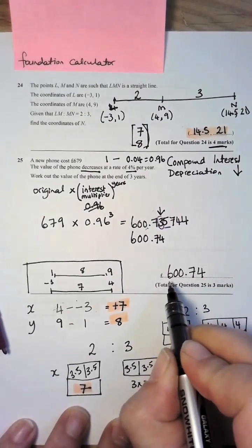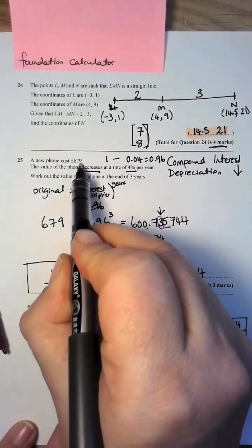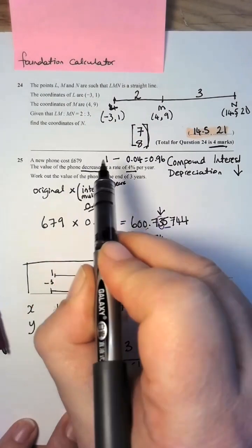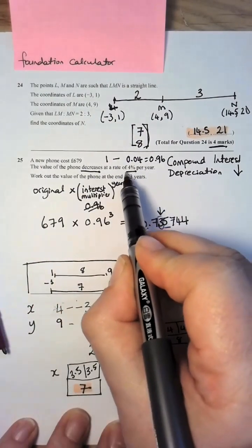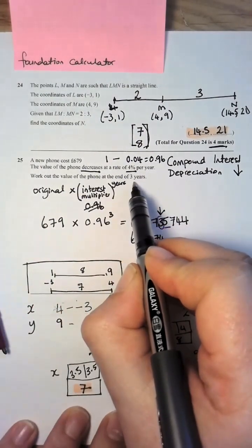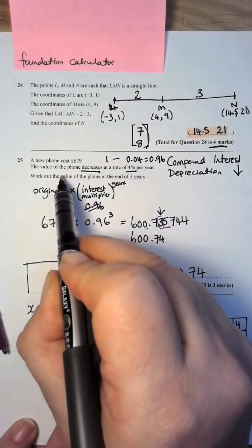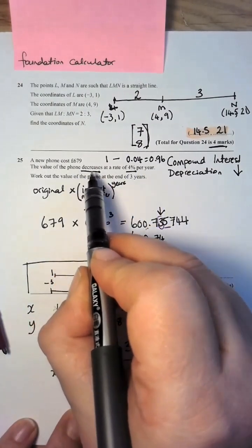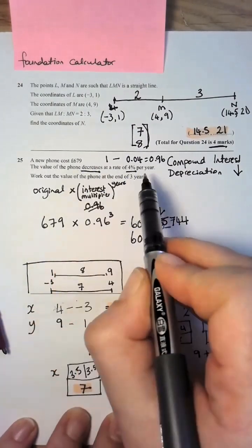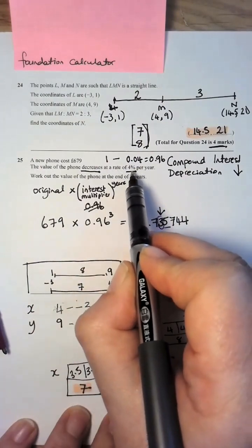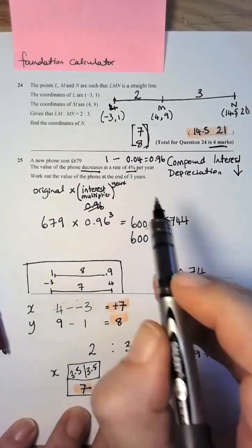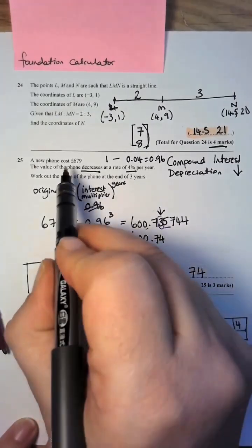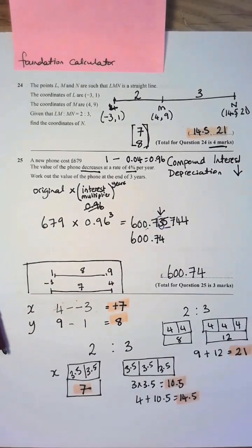Let's just check, we started with this number here, we decreased it the little amount over 3 years, it really would decrease. In actual fact, this phone would decrease a lot more than that in 3 years, but they've been really generous with the depreciation, and so this is less than this. After 3 years, a phone will cost less, it won't cost more.